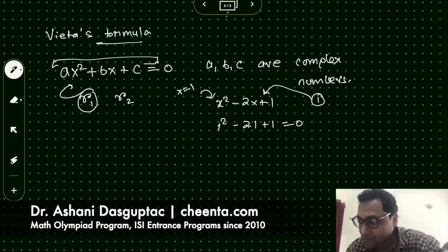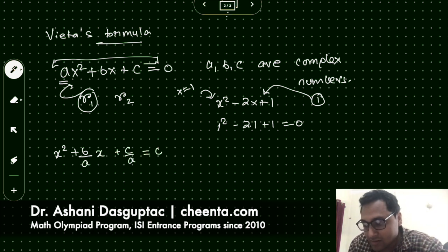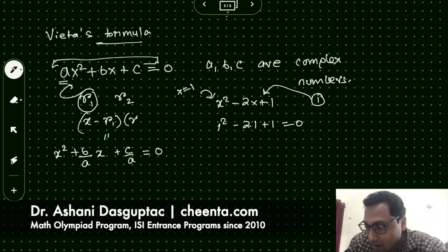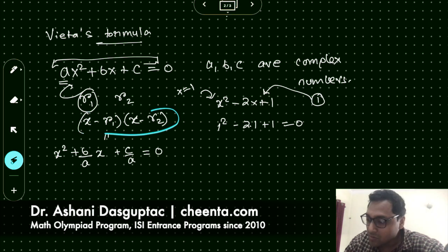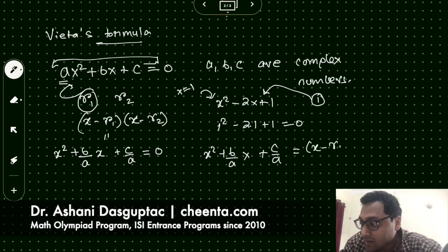Now let's look at this more carefully. If I divide by a on both sides, we have x squared plus (b/a)x plus (c/a) equals zero. Dividing by a does not change the roots. This means this expression equals x minus r1 times x minus r2, because plugging in r1 makes x minus r1 equal zero, and plugging in r2 makes x minus r2 equal zero. So these two expressions must be equivalent.